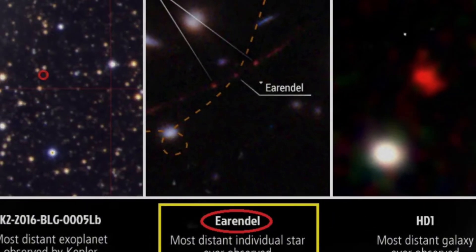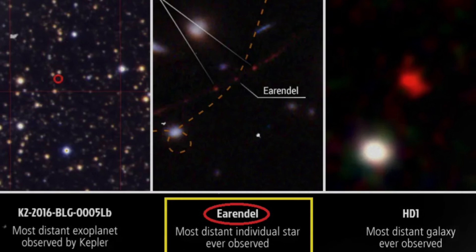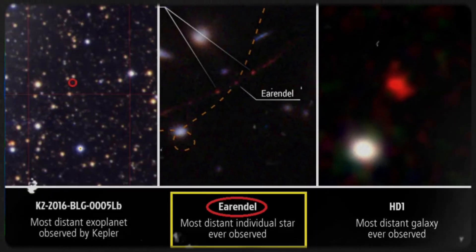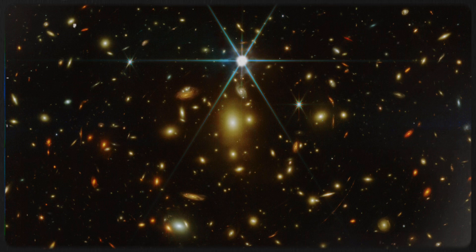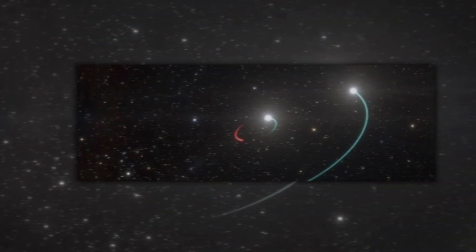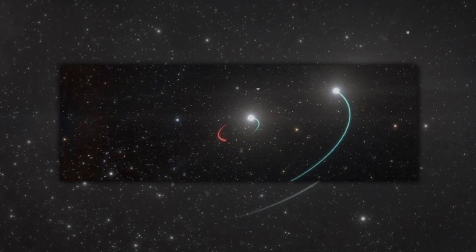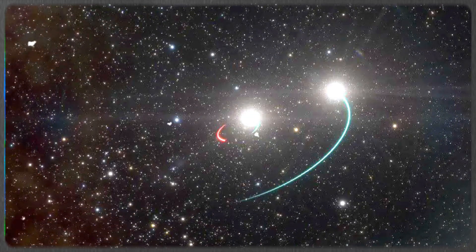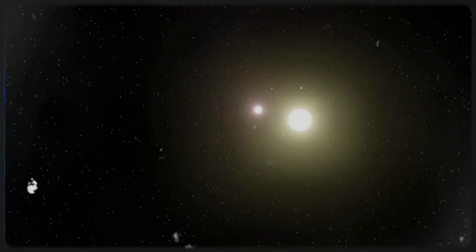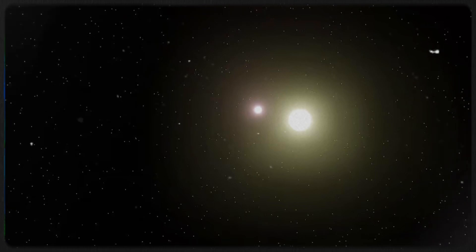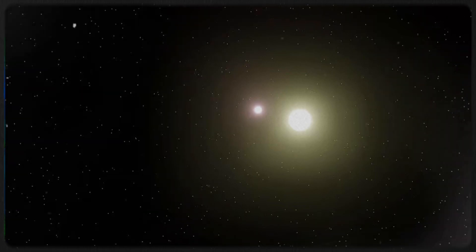Then came another surprising twist. Webb discovered evidence of a cooler, redder companion star near Eärendel. This suggests Eärendel might be part of a binary star system, consisting of a massive hot star and a smaller, cooler partner. If true, this would challenge prior assumptions about the early universe, where binary star systems were thought to be rare. This potential pairing opens up new possibilities.